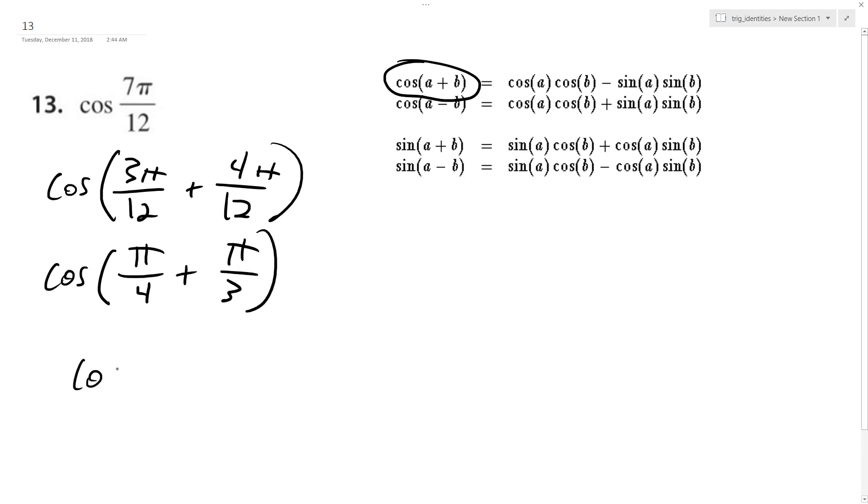And then we'll have cosine of π over 4, cosine of π over 3, minus sine of π over 4, sine of π over 3.